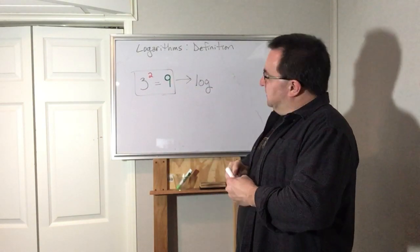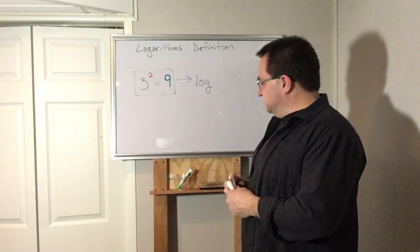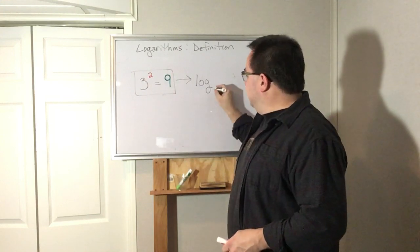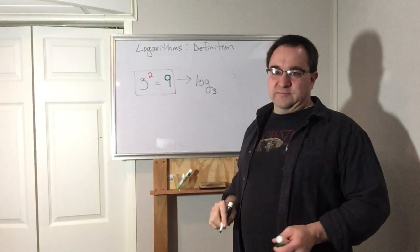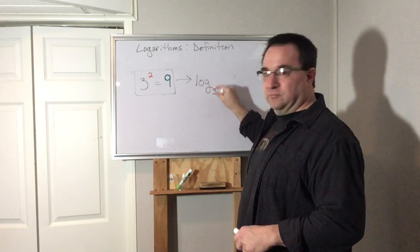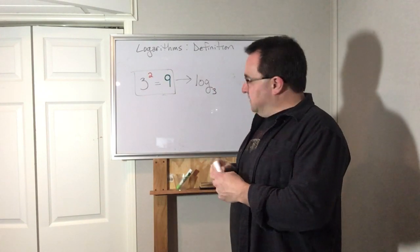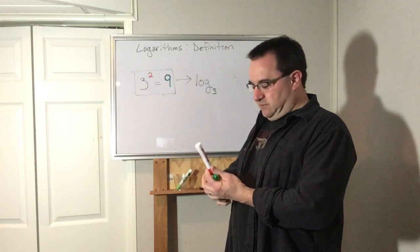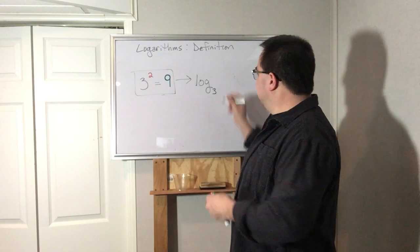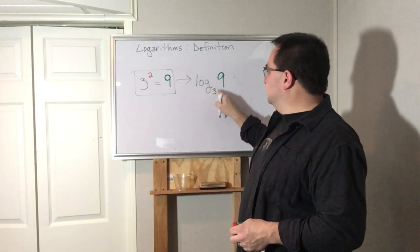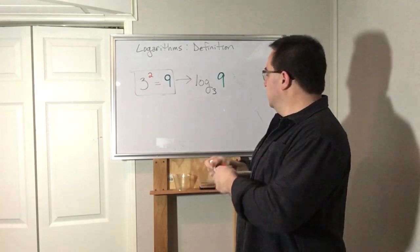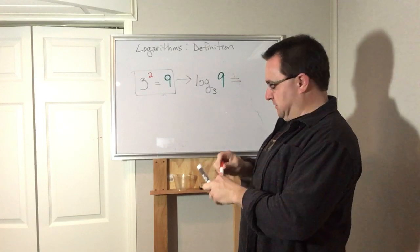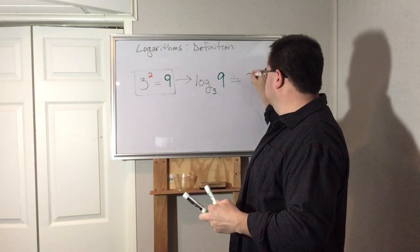So I'm rewriting this equation as a logarithm. This is the base of the power - that is the base of the logarithm. It gets subscripted. This, the answer to the exponential equation, goes here. So this is log base 3 of 9 and that would equal 2, the power.